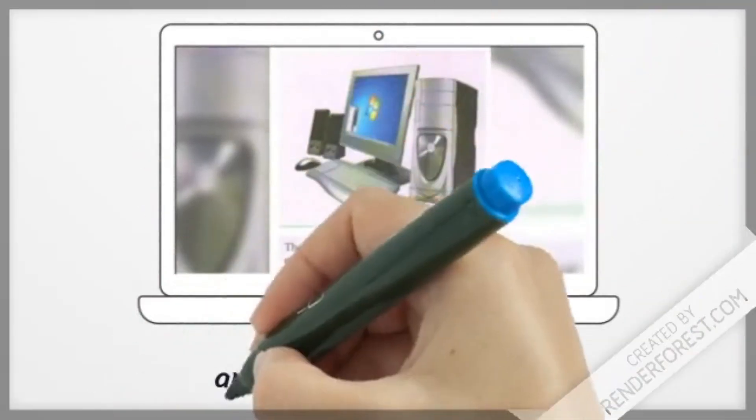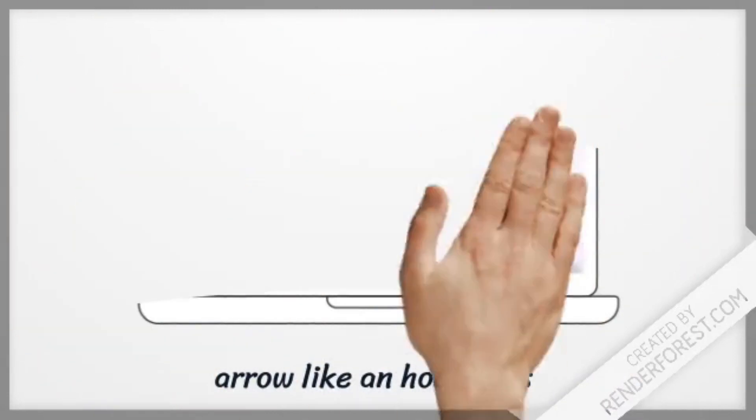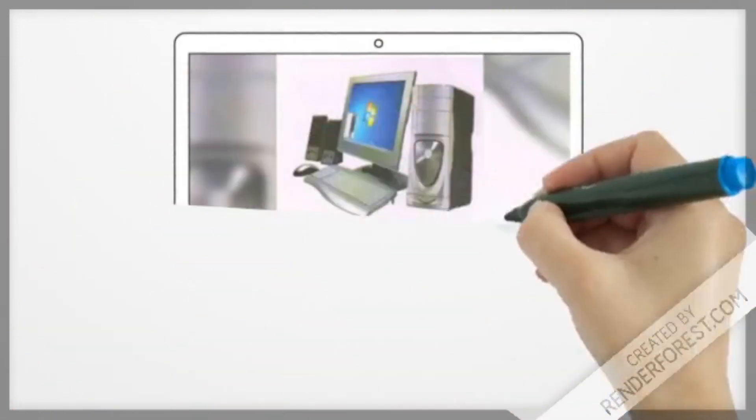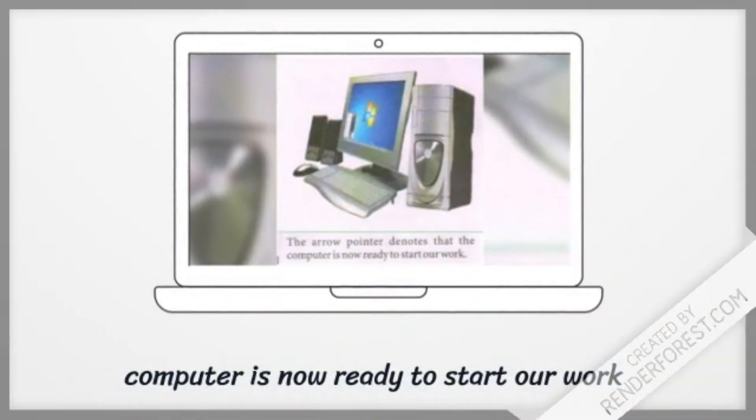The mouse pointer will take the shape of either an arrow or like an hourglass. The arrow pointer denotes that the computer is now ready to start our work.